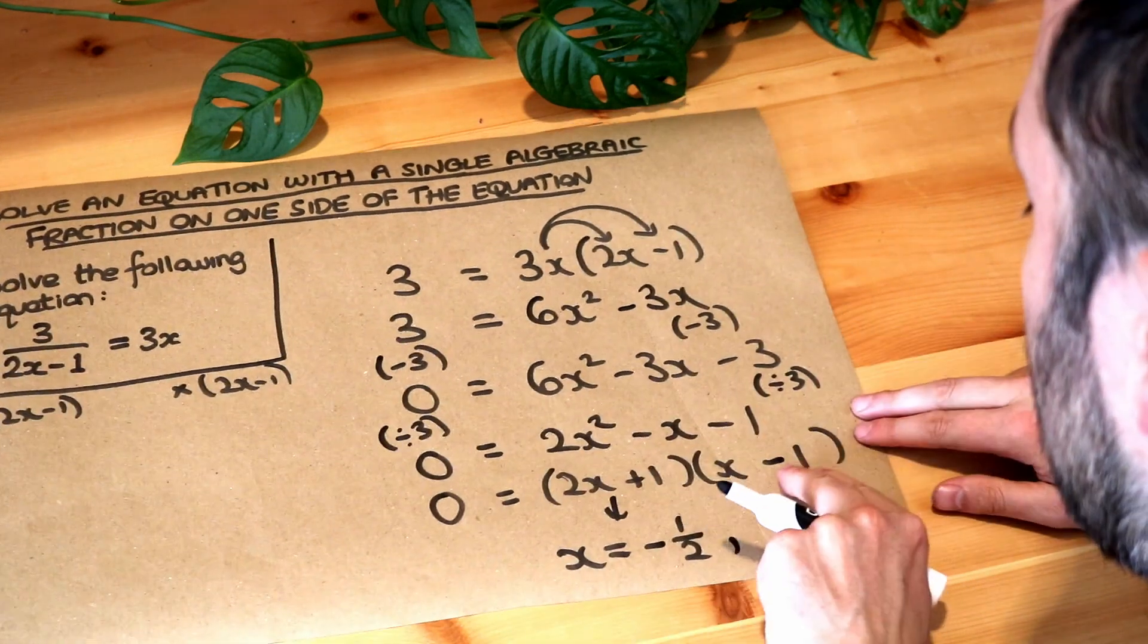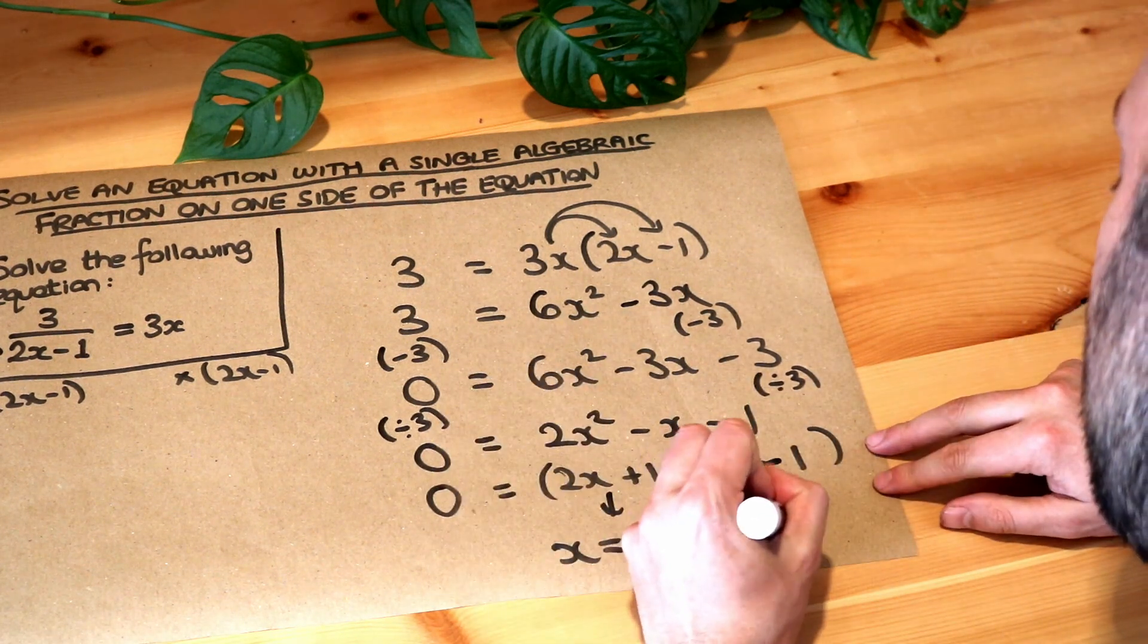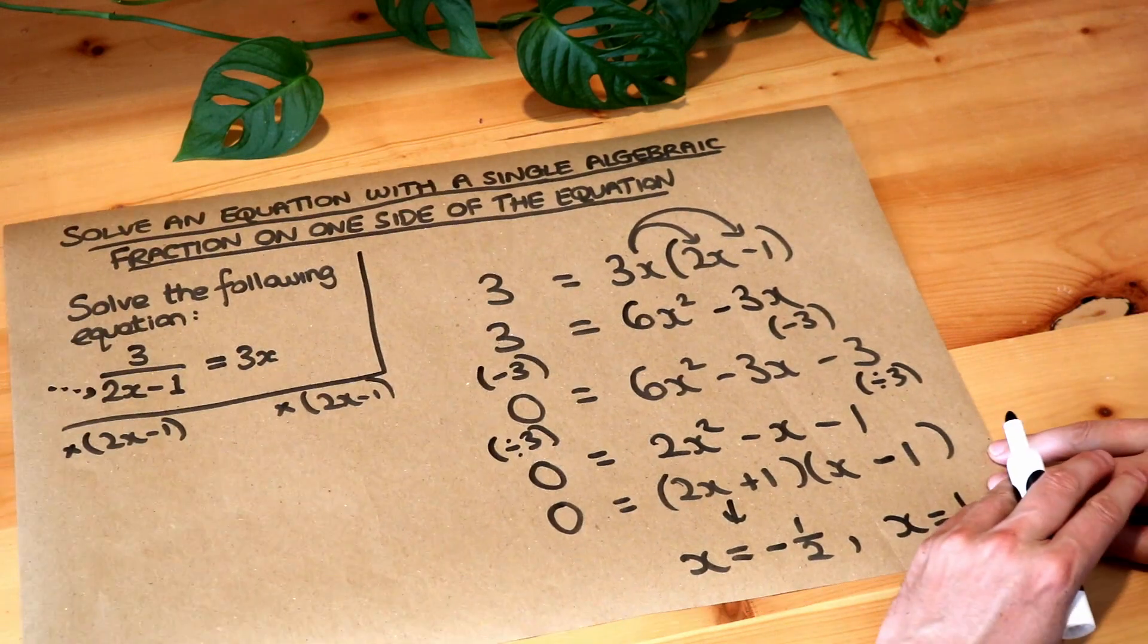So you get minus half as the solution, and then here if x minus 1 is equal to 0, then x is clearly equal to 1, and that is the final solution.